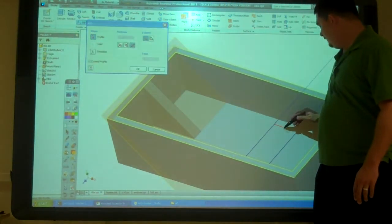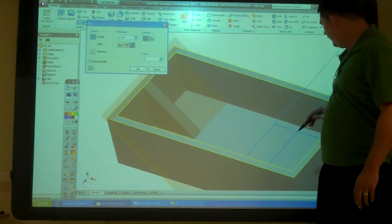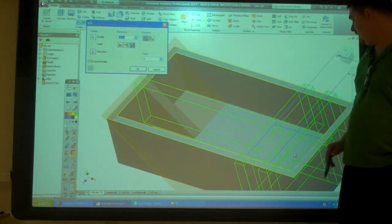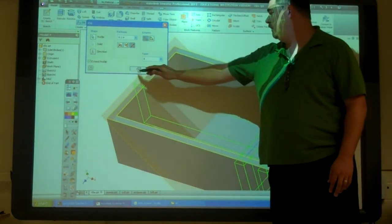Same thing here. Rib. Pick all of those. Direction. Go straight down. Okay.